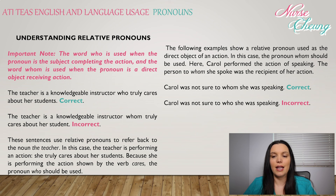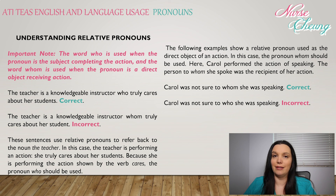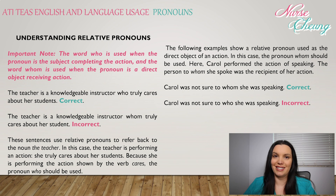The following example shows a relative pronoun used as the direct object of an action. In this case, the pronoun 'whom' should be used. Carol performed the action of speaking; the person to whom she spoke was the recipient of her action. 'Carol was not sure to whom she was speaking' — this is correct. 'Carol was not sure to who she was speaking' — this is incorrect.